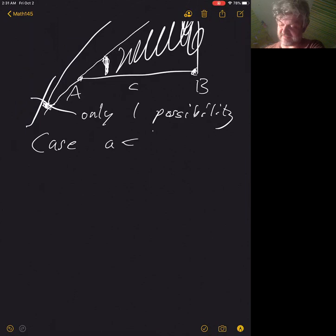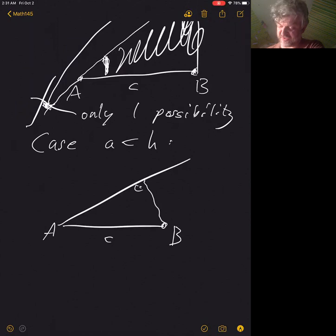Last case: given side a is less than this altitude h. Here's the altitude, and your given side lowercase a is really short. It's too short, with tiny little stubby arms to reach that slanted line. There's no intersection, so there's no triangle. There's no triangle that has these properties - no possibility.